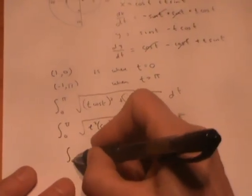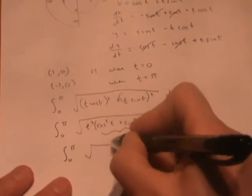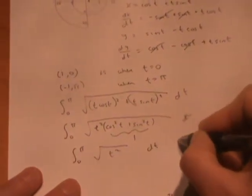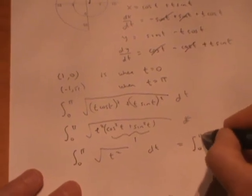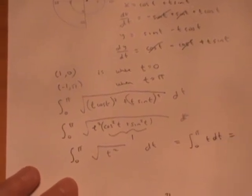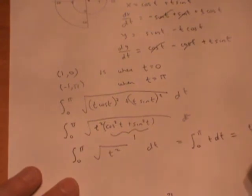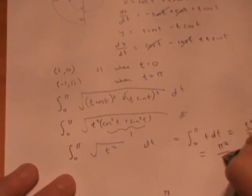we have the integral of the square root of t² dt. Since t is positive here, the square root of t² is just t. Integrating that, I get t²/2 evaluated from π to 0, which gives a final answer of π²/2.